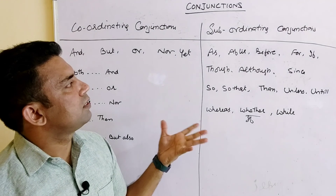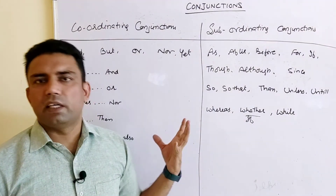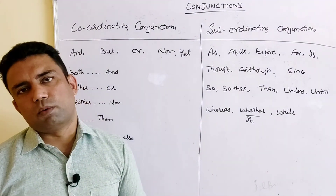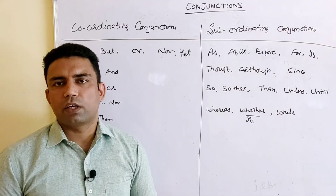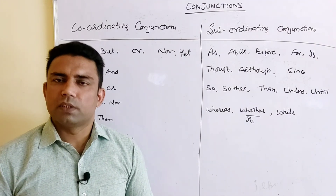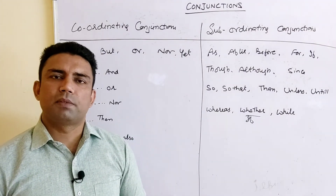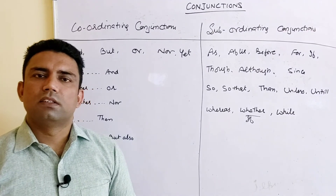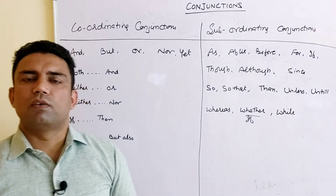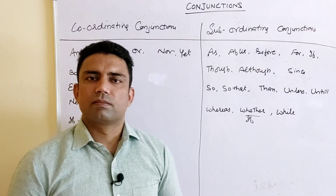So dear students, these are the conjunctions used in two parts: coordinating conjunctions and subordinating conjunctions. I hope this video will help you to understand this chapter better. Thank you very much for watching the video.